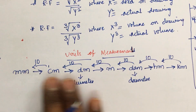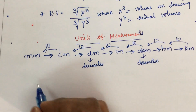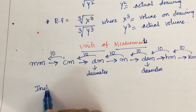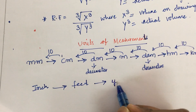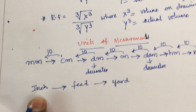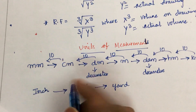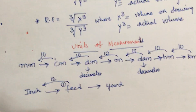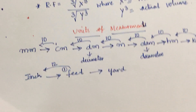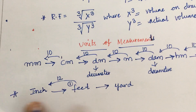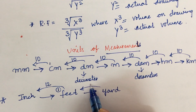We also encounter imperial units in problems. The sequence is: inch → feet → yard. 1 foot equals 12 inches. You need to remember this and practice, as problems related to diagonal or plane scales may use these units.